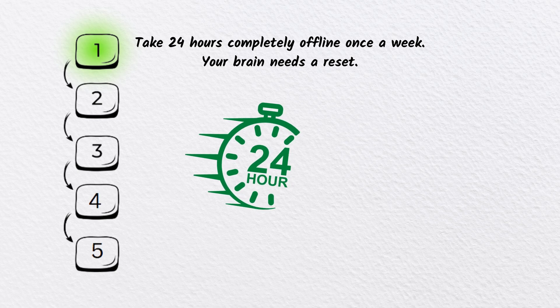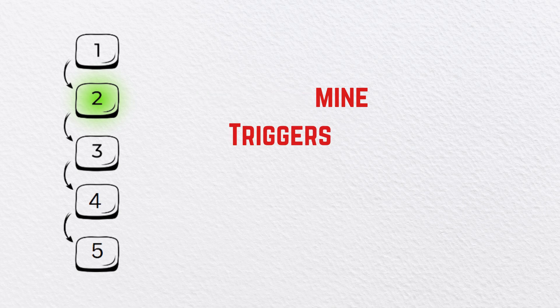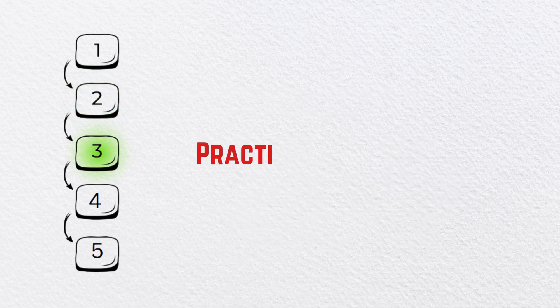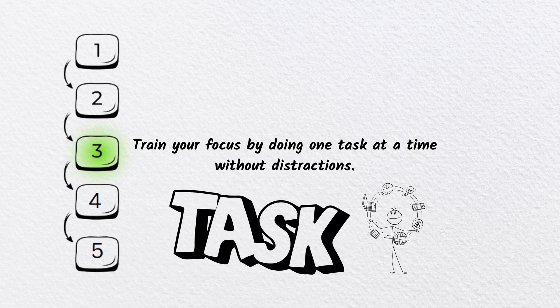Two: Limit dopamine triggers. Turn off unnecessary notifications, remove apps that waste time. Three: Practice deep work. Train your focus by doing one task at a time without distractions.